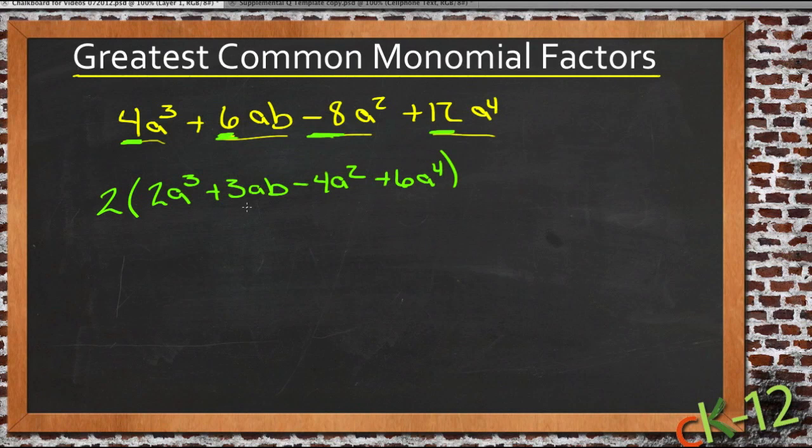So now I've pulled out a factor and none of the numbers left inside, well there isn't a number that all four of the constants left inside would divide by. 2 and 3 and -4 and 6 don't all have something that they will all divide by.